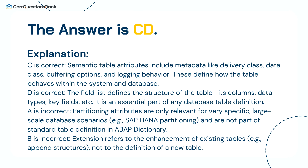The answer is C and D. C is correct: semantic table attributes include metadata like delivery class, data class, buffering options, and logging behavior — these define how the table behaves within the system and database. D is correct: the field list defines the structure of the table, its columns, data types, key fields, etc., and is an essential part of any database table definition. A is incorrect: partitioning attributes are only relevant for very specific large-scale database scenarios, e.g., SAP HANA partitioning, and are not part of standard table definition in ABAP dictionary.